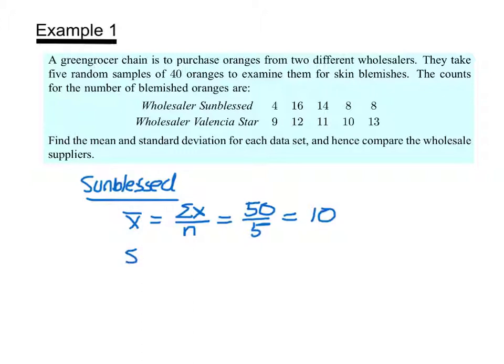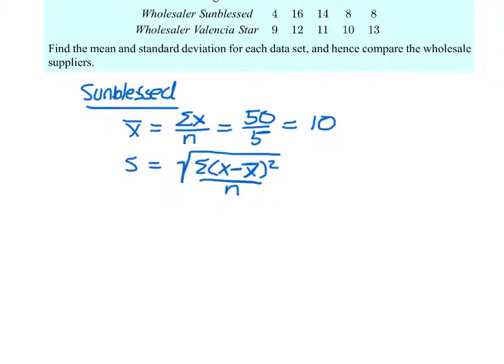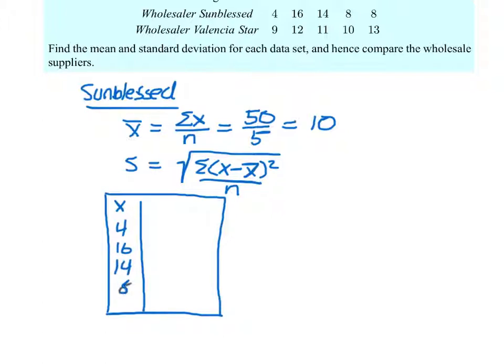Now remember, for the standard deviation, we're going to use this equation. And it's helpful to generate a table to calculate these values if we're going to do it by hand. I'll show you how to do it by calculator in class, but you should see how it's generated first. So here we're going to have our variable x or all our variables in this column, which are 4, 16, 14, 8, and 8.